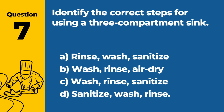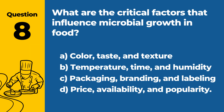Question 7: Identify the correct steps for using a three-compartment sink. a. Rinse, wash, sanitize. b. Wash, rinse, air dry. c. Wash, rinse, sanitize. d. Sanitize, wash, rinse. Answer: c. Wash, rinse, sanitize. The proper steps for using a three-compartment sink are washing, rinsing, and then sanitizing.